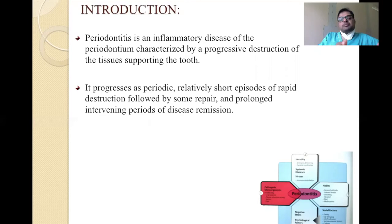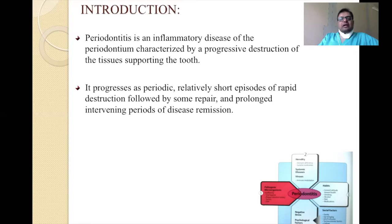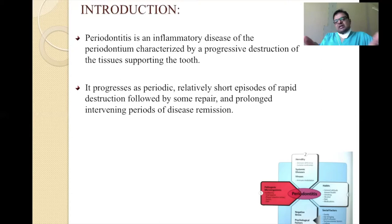Periodontal disease is progressive but periodic — it has episodes of exacerbation and episodes of remission. Think of it like driving a car: you drive at 120 km/h, then slow to 60, then back to 120. Your journey is continuous but the speed varies. Similarly, the periodontal disease process keeps moving, sometimes fast and sometimes slow, but it's happening at all points in time.